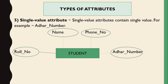Single-valued attributes are those that contain a single value. For example, roll number and other numbers have only single values. Single-valued attributes do not have repeated or multiple values — they assign only one value. These types of attributes are called single-valued attributes.